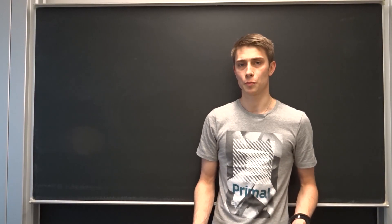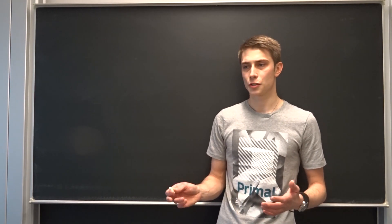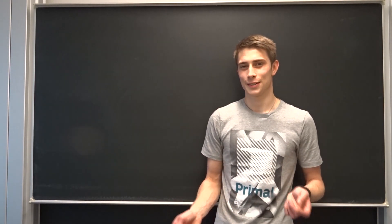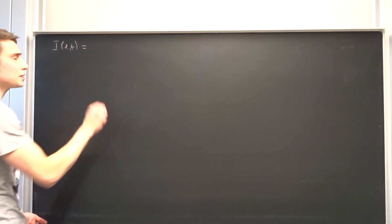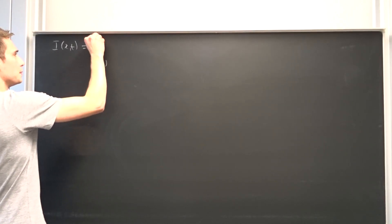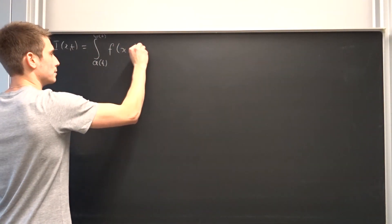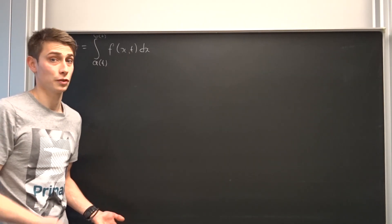Before getting started with the proof, you should remember what we wanted to find out. We wanted to show that we can interchange the derivative and the integral sign. So let's define an integral first. Let's say it's I in terms of x and t, defined as the integral from a in terms of t up to b in terms of t of some arbitrary function f of x and t, times dx. And now we are going to use the limit definition of a derivative on this integral.